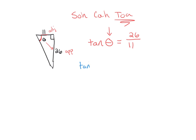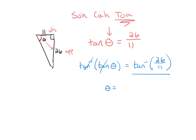We're solving for theta, so if we take the inverse tan on both sides, they cancel out and you isolate the angle. Then you can just type this into your calculator — make sure you're in degree mode — and you will get about 67 degrees.